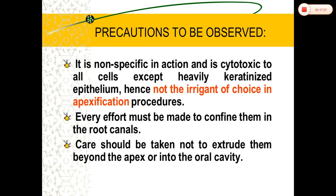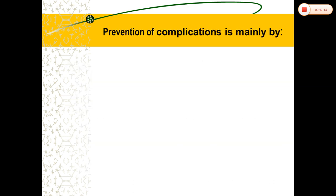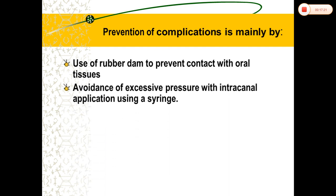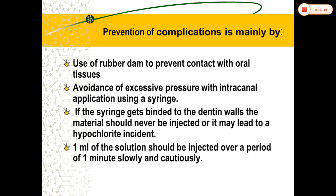Use rubber dam to prevent contact with oral tissues. Avoid excessive pressure with intracanal application using the syringe. Never force the syringe piston — slowly deliver the hypochlorite into the canal. If the syringe needle gets bound to the dentinal walls, the material must never be injected, as it may lead to a hypochlorite incident. Remove the syringe slowly. One ml of the solution should be injected over a period of one minute, slowly and cautiously.